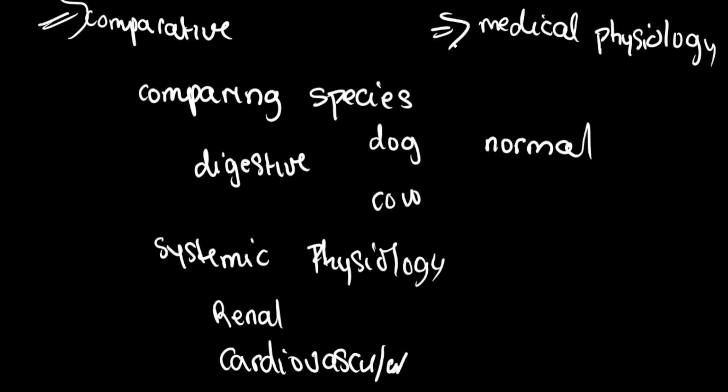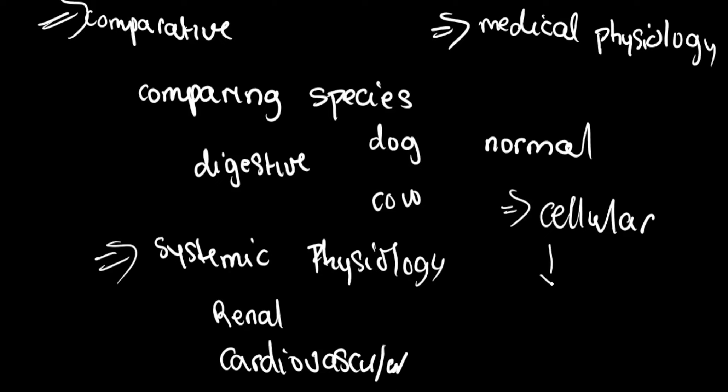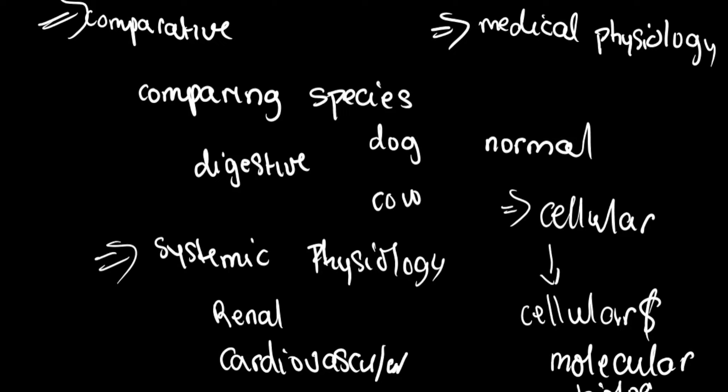Another branch we'll consider is cellular physiology. In cellular physiology, we basically study the cell. In recent times, cellular physiology has been modified into cellular and molecular biology. We study how the cells function at the cellular level and how this influences the overall function of the living organism.